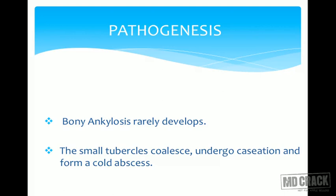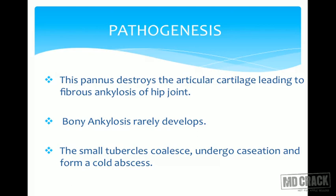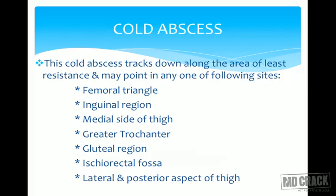In a cold abscess there is no sign of inflammation, which is usually seen in infection — that is, the five cardinal signs of rubor, dolor, calor, tumor, and functio laesa. The pannus destroys the articular cartilage, leading to fibrous ankylosis of the hip joint. Bony ankylosis is quite rare.